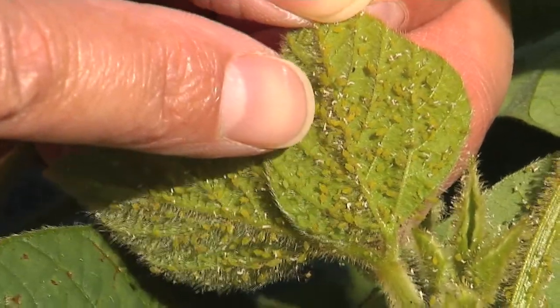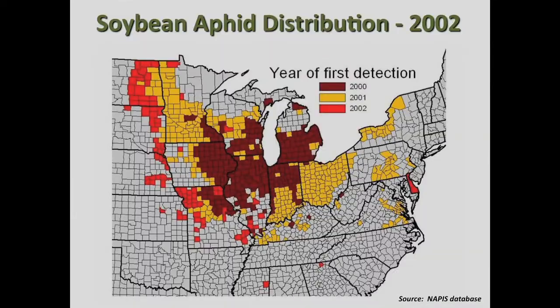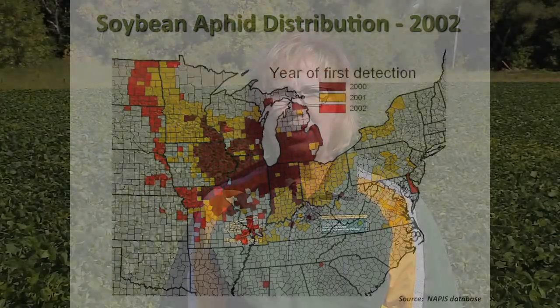Soybean aphid was introduced into the United States in 2000, and it quickly spread throughout the north-central soybean producing states. It was found in North Dakota in 2001, and since then it's been a major pest of soybeans in North Dakota.